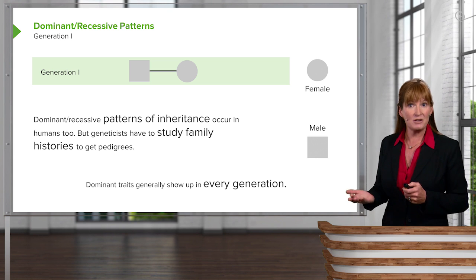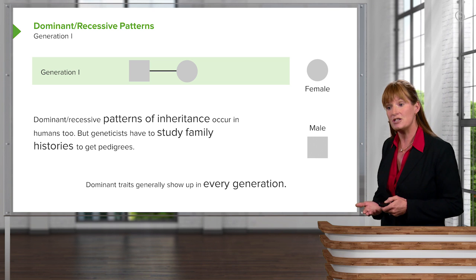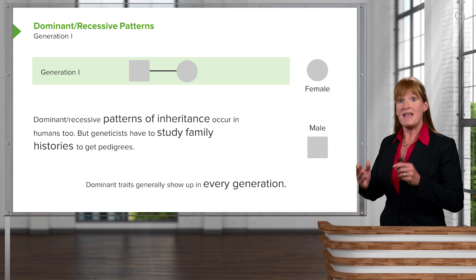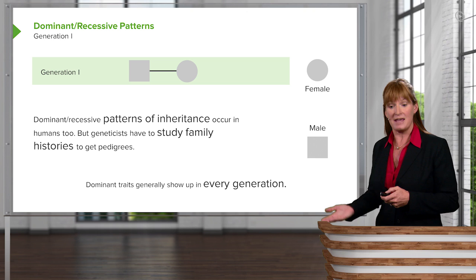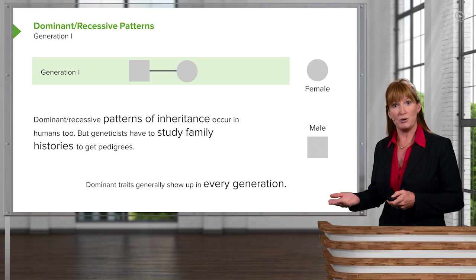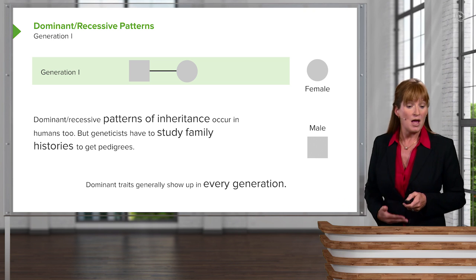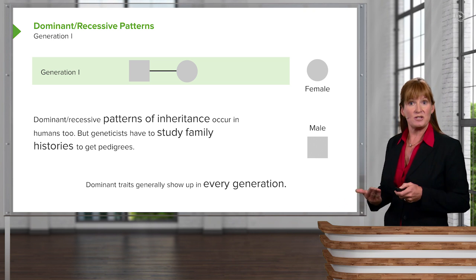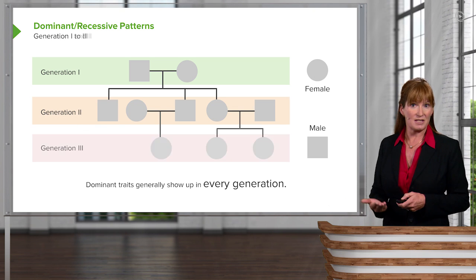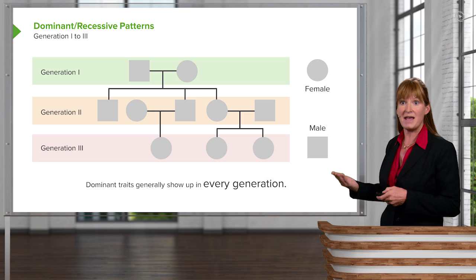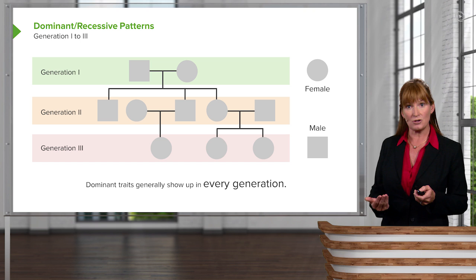Dominant traits will generally show up in every generation, because if the parent has the allele — as in the purple flower — then they will produce purple offspring, at least some. To introduce the pedigree, we separate it out by generations. Here are three generations. Males are generally exhibited as squares, females as circles.